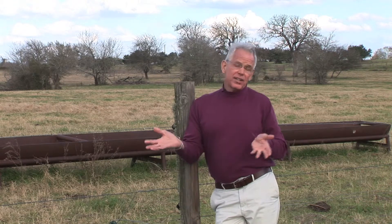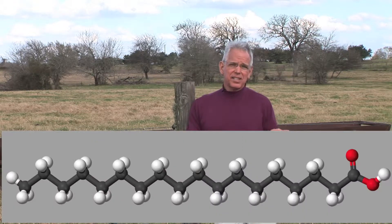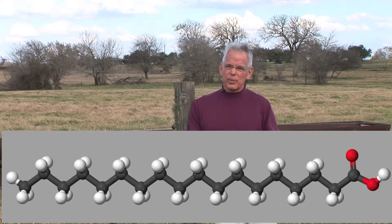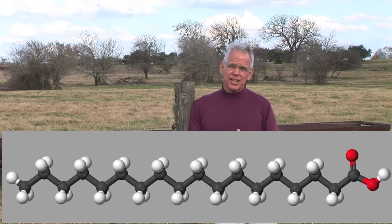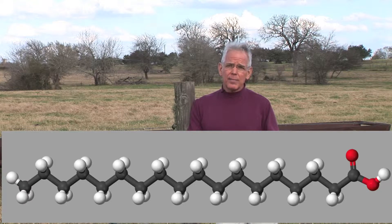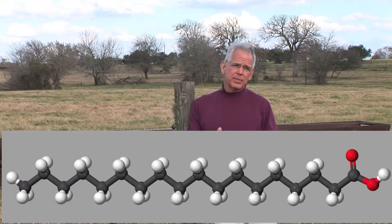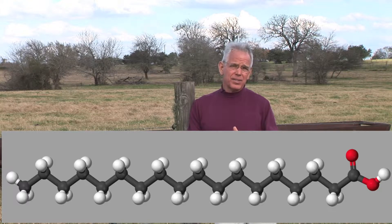In a saturated fatty acid — let's pick stearic acid — it has 18 carbons. The first carbon is an acid group, a carboxyl group. It's the other carbons that make it saturated. Every one of those carbons has two hydrogens associated with it, except the end one, which has three. It is saturated with all the hydrogens it can take. That's a saturated fatty acid.